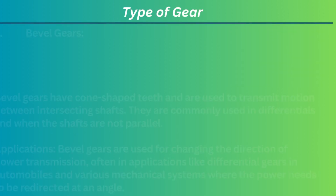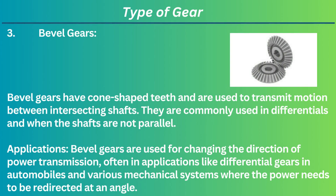3. Bevel gears. Bevel gears have cone-shaped teeth and are used to transmit motion between intersecting shafts. They are commonly used in differentials and when the shafts are not parallel. Applications: Bevel gears are used for changing the direction of power transmission, often in applications like differential gears in automobiles and various mechanical systems where the power needs to be redirected at an angle.